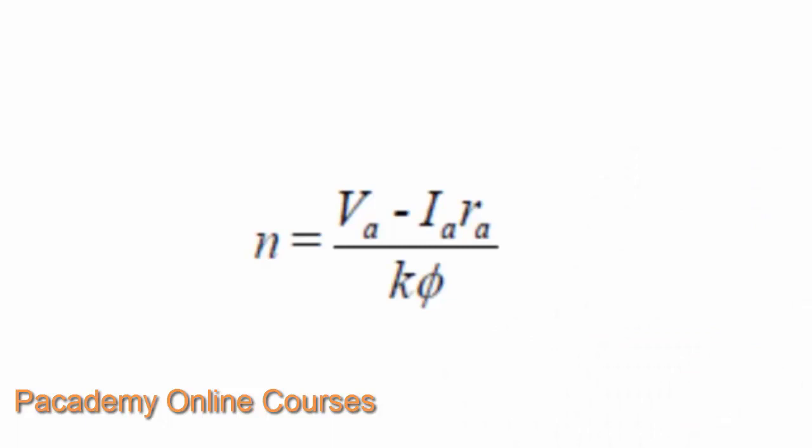The speed of any DC motor can be defined by the equation: N = (VA − IA·RA) / K·Φ, where Φ is the flux per pole, VA is the voltage across the armature, IA is the current flowing through the armature, and RA is the armature resistance.